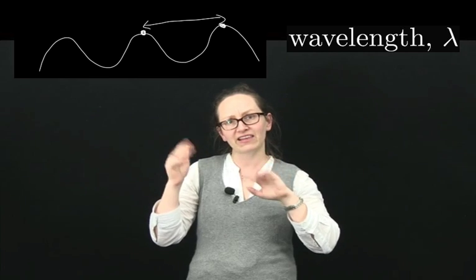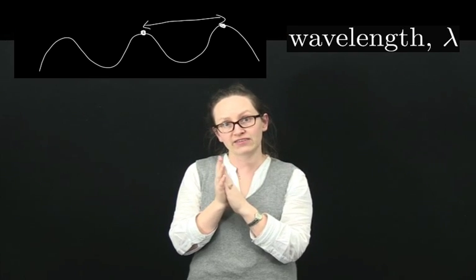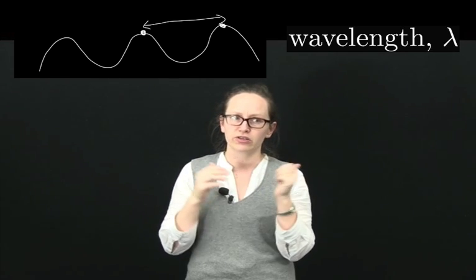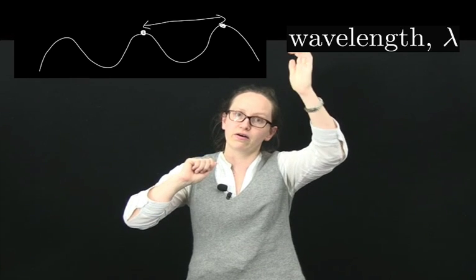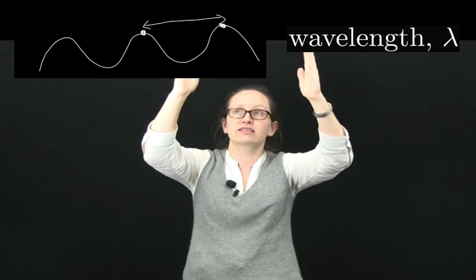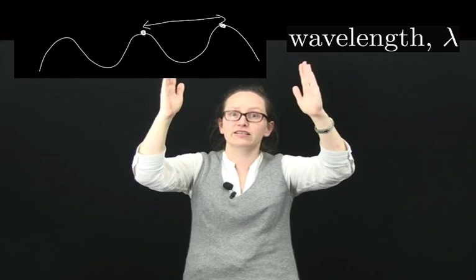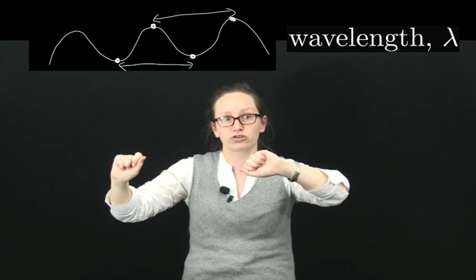Now there's several terms associated with waves that you're going to need to know. First of these is wavelength. The wavelength, like its name implies, is the length of the wave. It's given the symbol lambda and is measured in meters. So one way to measure the wavelength is to measure from the crest of one wave to the crest to the next crest on the wave. And that difference in distance is called the wavelength. Alternatively, you could measure from the trough to the trough.